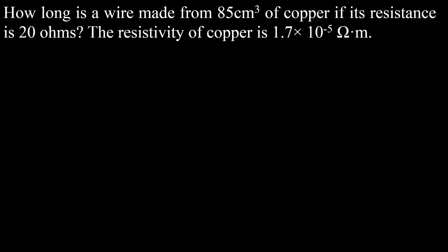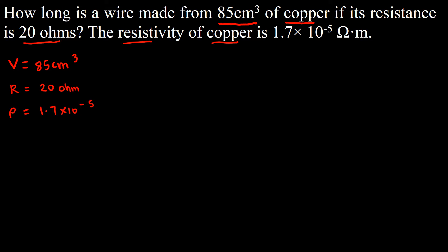In this problem we are given 85 centimeters cubed, and by just looking at the unit centimeters cubed, that tells us it is the volume of the copper wire. So volume V equals 85 centimeters cubed. We also have the resistance R equal to 20 ohms, and the resistivity, symboled rho — a Greek letter — equal to 1.7 times 10 to the power of negative 5 ohm meter.